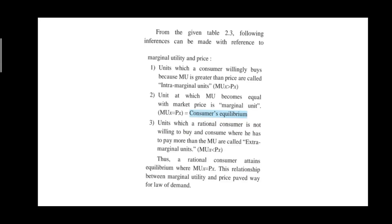Third inference: at the fifth and sixth units, units which a rational consumer is not willing to buy — where he would have to pay more than the marginal utility received — are called extra-marginal units, where MU of X is less than price of X. Thus, a rational consumer attains equilibrium where marginal utility of X equals price of X. This relationship between marginal utility and price paved the way for the law of demand.